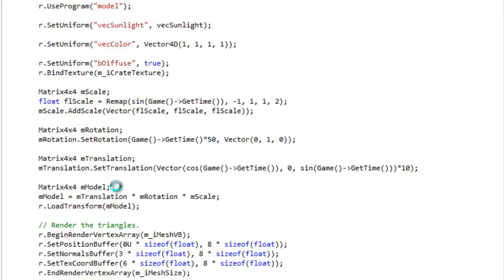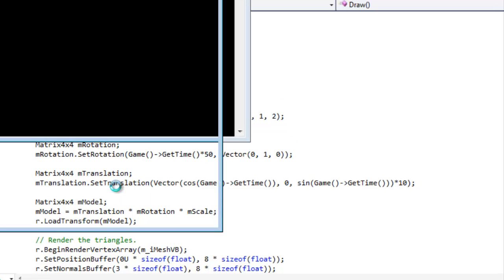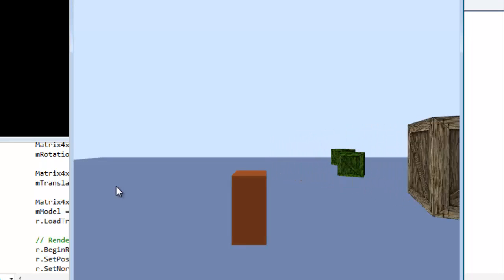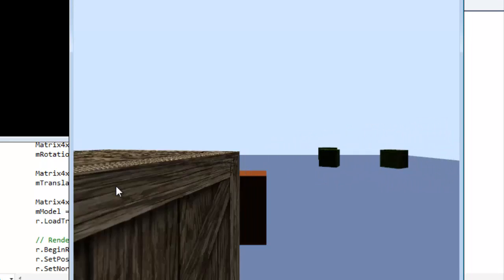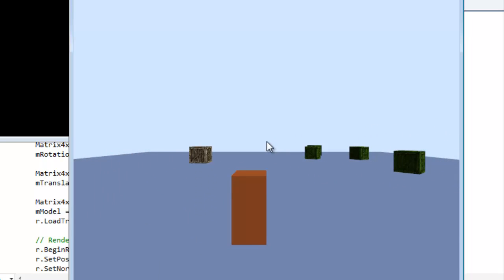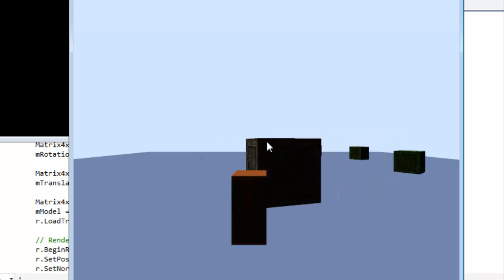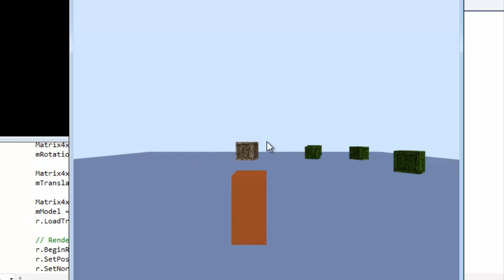Just by doing that, it will take all of the vertices in that mesh and individually pass them through my model matrix that I made and transform all of the individual vertices to get this model that is now spinning and moving and scaling just like the way we want it to.